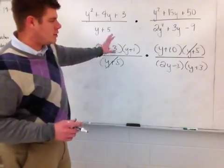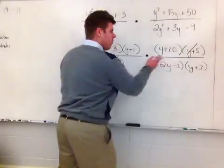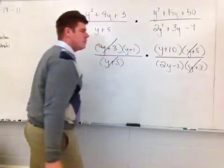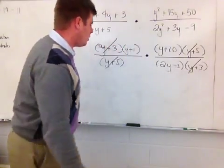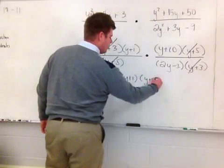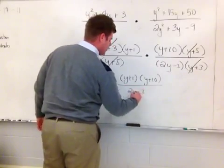I'm going to go check some more. And what I'm going to notice is that 1 is on the top and 1 is on the bottom. So this y plus 3 here reduces with this y plus 3 here. And what I am now left with is the statement y plus 1. So y plus 1 times y plus 10, all divided by 2y minus 3.